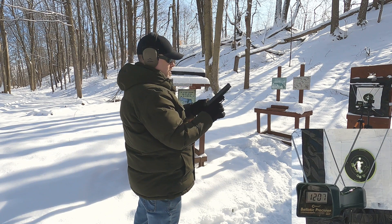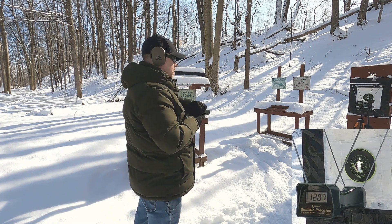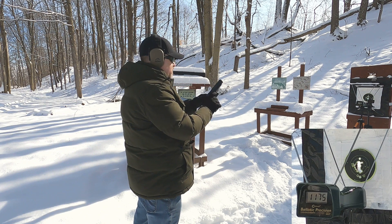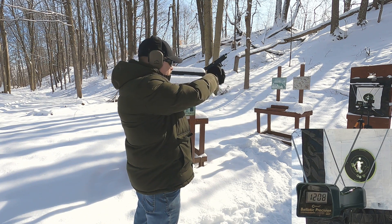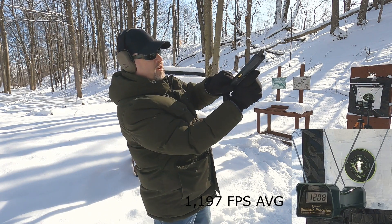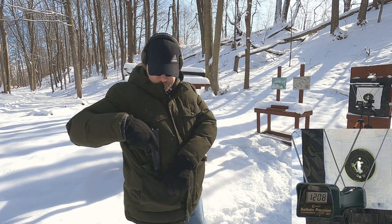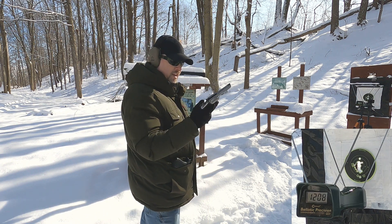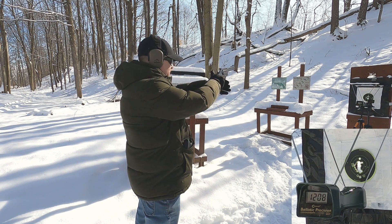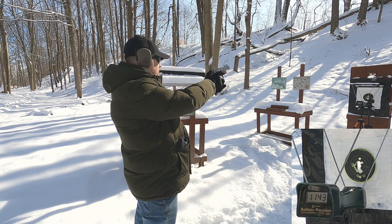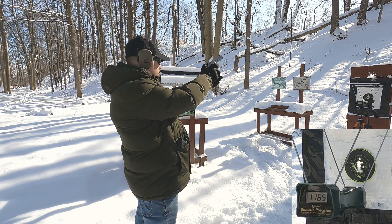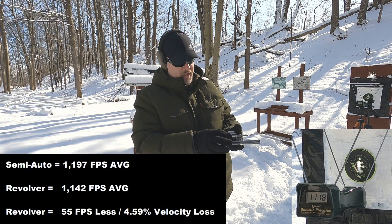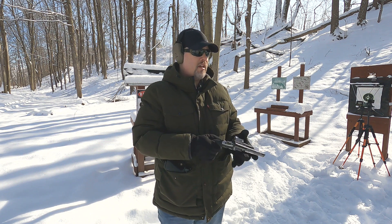Buffalo Bore 190 grain through the semi-auto: 1207, 1175, 1208. Magazines are falling out and it's jamming up — that's why I quit using this conversion. Through the revolver: 1143, 1165, 1118. Very inconsistent velocity with that load.